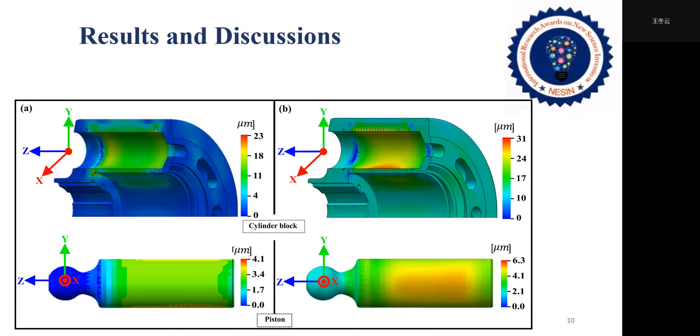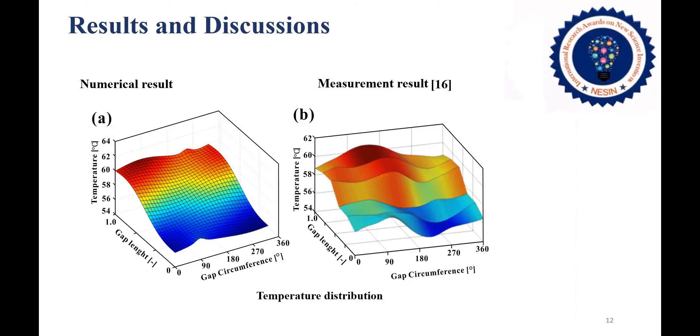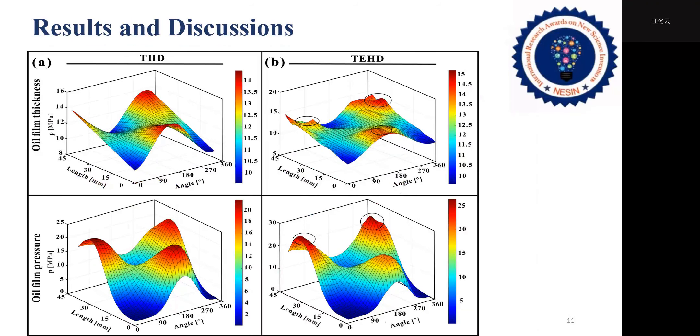This figure compares the oil film thickness and pressure film distribution calculated by THD and TEHD. Due to the external load on the piston, the variation amplitude of the film thickness decreases significantly with increasing load pressure. Furthermore, the hydrodynamic pressure effect causes visible elastic deformation of the piston surface. The piston body deformation plays a significant role in the mechanism and lubrication process of the piston-cylinder interface, especially in terms of the maximum fluid thickness.